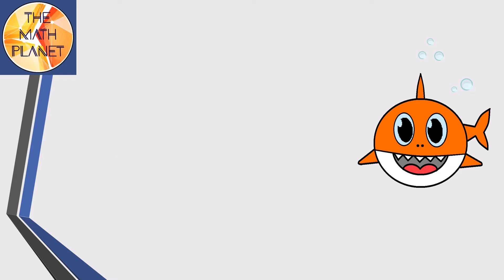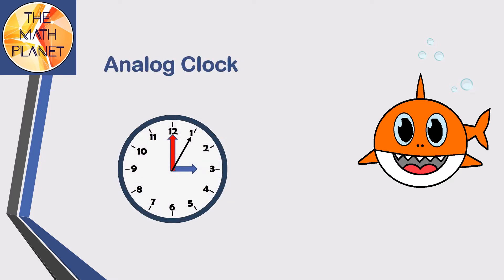Let's start with the analog clock. An analog clock is divided into 12 equal parts and it has three pointers or hands. The thin hand is for the seconds, the thicker long hand is for the minutes, and the shortest hand is for the hours.